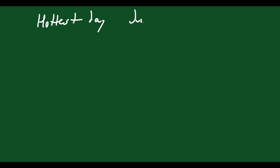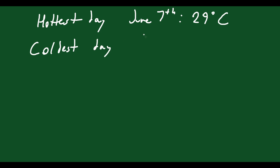Now let's do another example. You're told that the hottest day of the year is June 7th, when it's 29 degrees Celsius, and the coldest day of the year is 14 degrees Celsius. Using a sinusoidal function, model the temperature using a 365-day period. Then find how many days after June 7th is the first spring day when the temperature reaches 20 degrees Celsius.